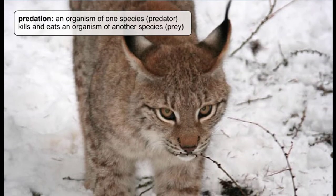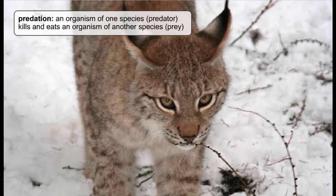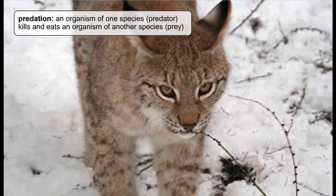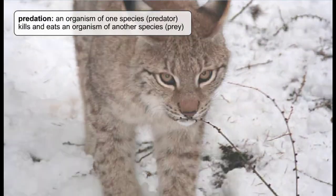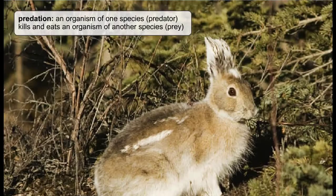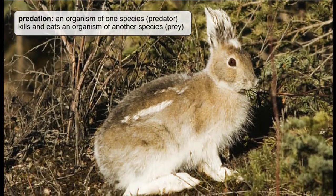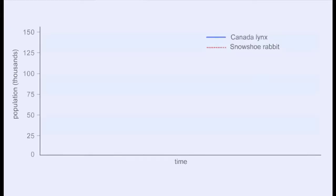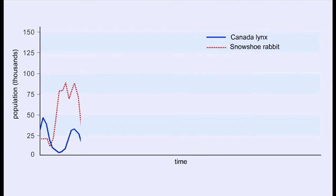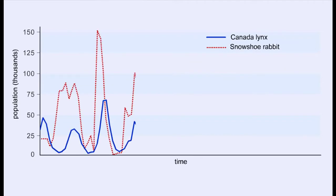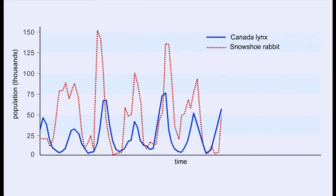Predator-prey relationships occur when one species, the predator, kills and eats an organism of another species, the prey. This graph shows the cyclical nature of predator-prey relationships, in this case among populations of Canada lynx and snowshoe rabbits.